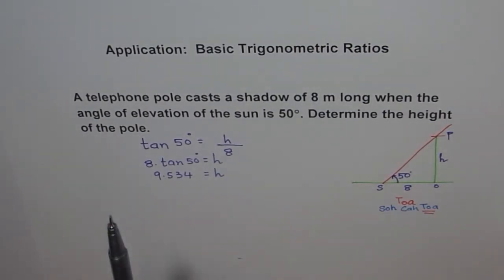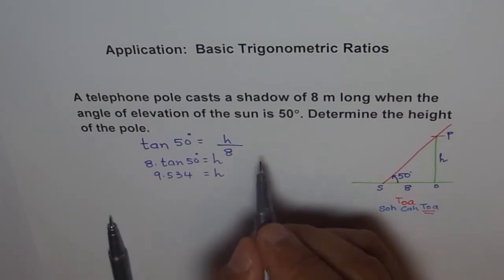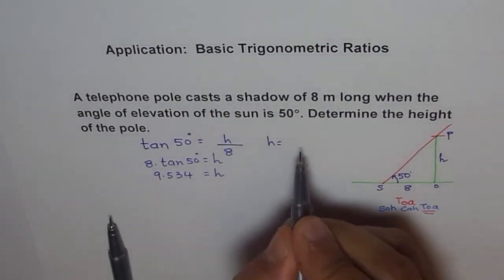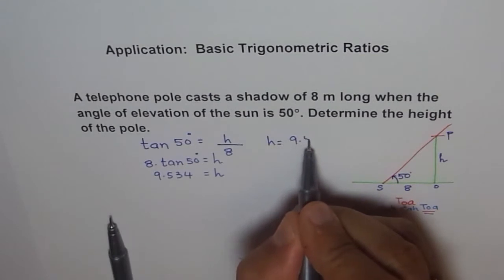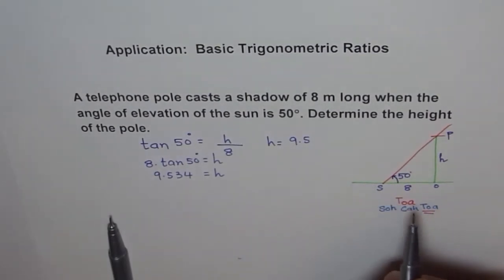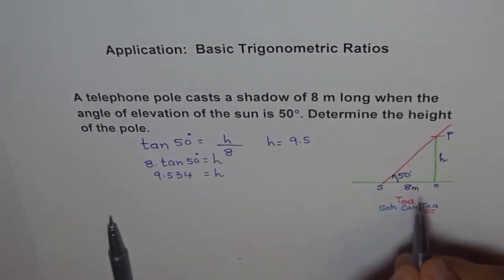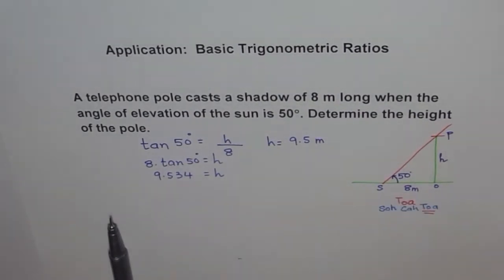We can round this number to one decimal place: height equals 9.5 meters. Why meters? Because 8 was given to us in meters. So it's that simple to find the height.